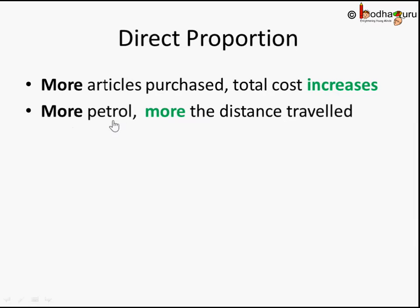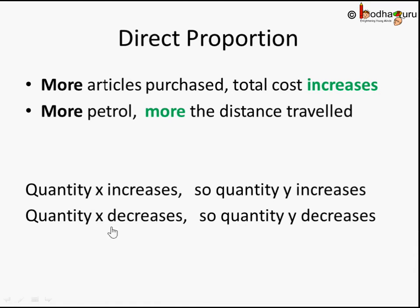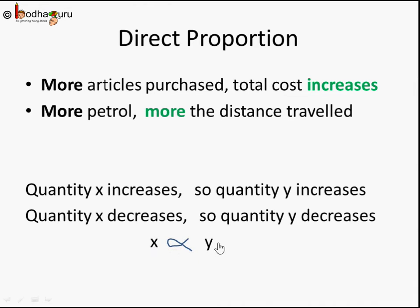Same thing for petrol: say you put 5 liters of petrol and you can take your two-wheeler for 300 kilometers. If you put 10 liters of petrol, you can go for more distance. So more the petrol you put in your vehicle, more the distance you can travel. When quantity x — for example, petrol — increases, and quantity y — the distance — also increases, or vice versa, if x decreases, y also decreases.